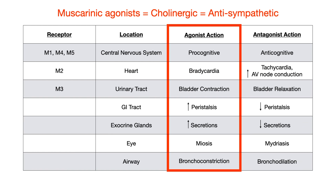All of these effects are anti-sympathetic. If a bear jumps out at you, you don't want to turn on the muscarinic cholinergic system, because doing so is anti-sympathetic. Think about it — if you're about to fight or run from a bear, do you really want your body peeing, pooping, salivating, narrowing your pupils, and bronchoconstricting? To summarize: when you give somebody a muscarinic agonist, you're giving a cholinergic drug and the clinical effects are anti-sympathetic.